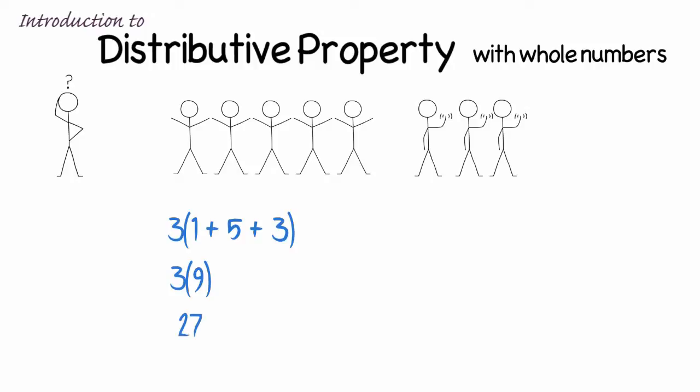I could also have done this individually. I could have distributed the three by multiplying each of those situations separately, because the distributive property says multiplying a group of numbers individually is the same thing as adding first and then multiplying.